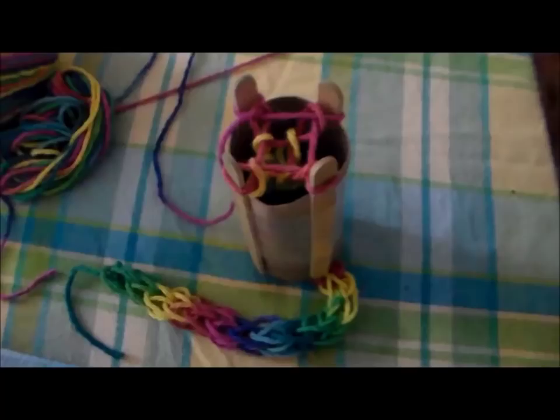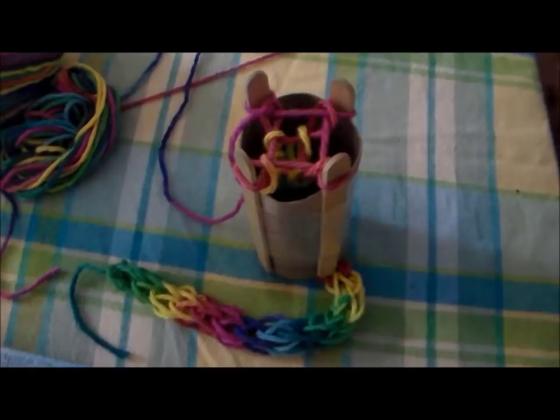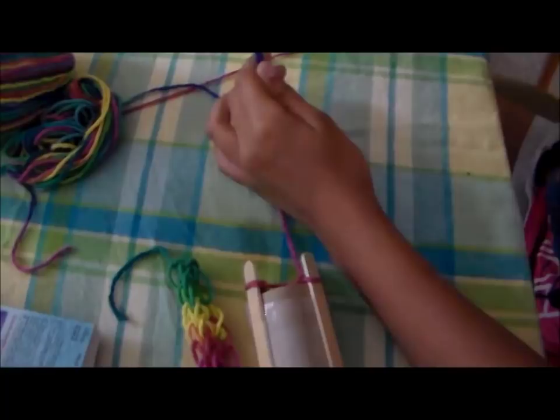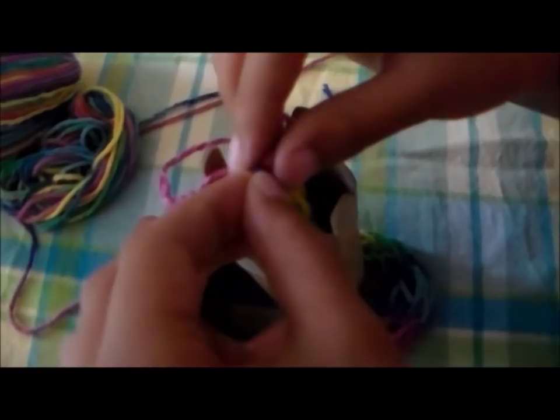Once you've reached your desired length, it's time to secure your project. So we're going to cut, leaving at least, looks like, six inches of yarn. So we're just taking off the loops off the popsicle sticks and threading it through that yarn at the end, and this should keep it secured.